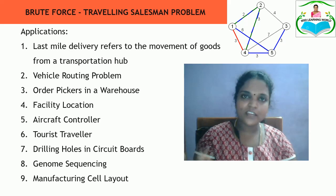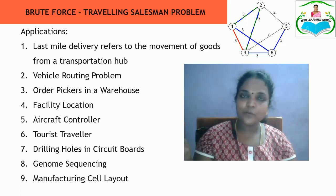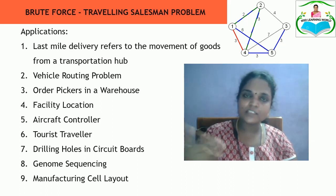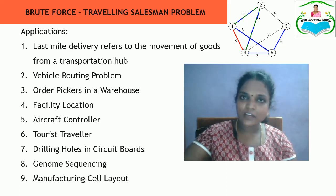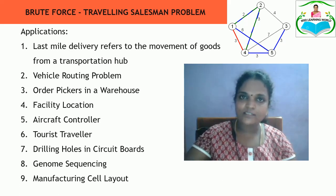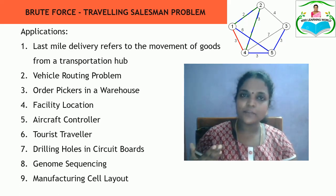Another application is order pickers in a warehouse. When you have a warehouse and want to deliver items to various places, you have to select the order such that the warehouse is very near to the delivery points. To avoid long distances, you can use the Travelling Salesman Problem to solve order-picking problems in a warehouse.